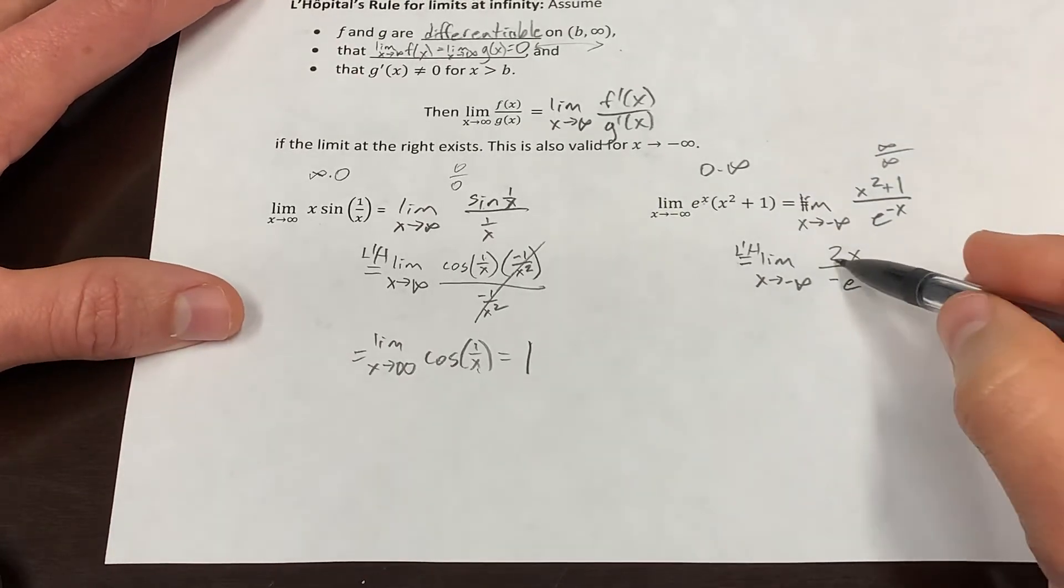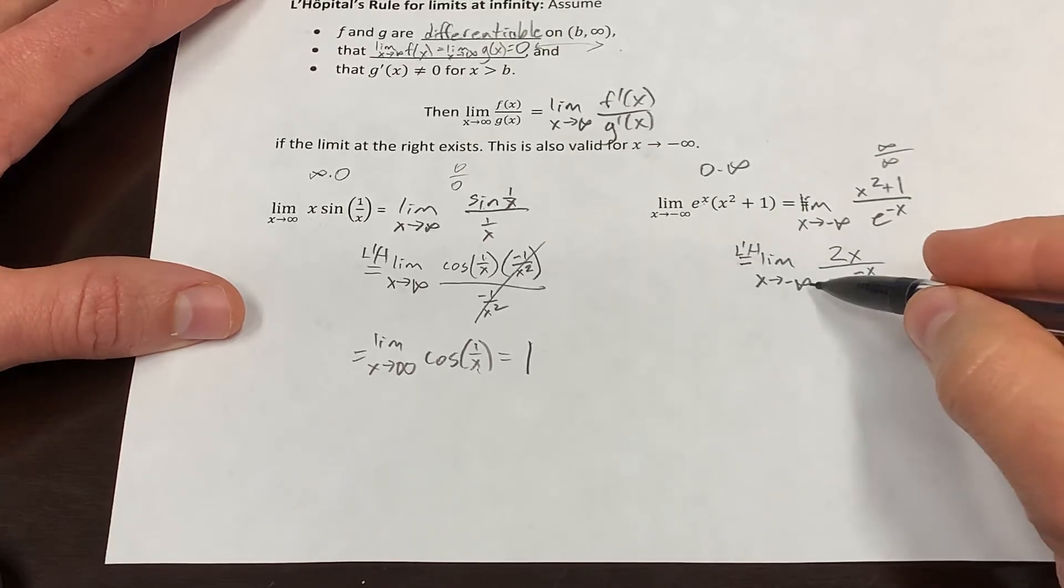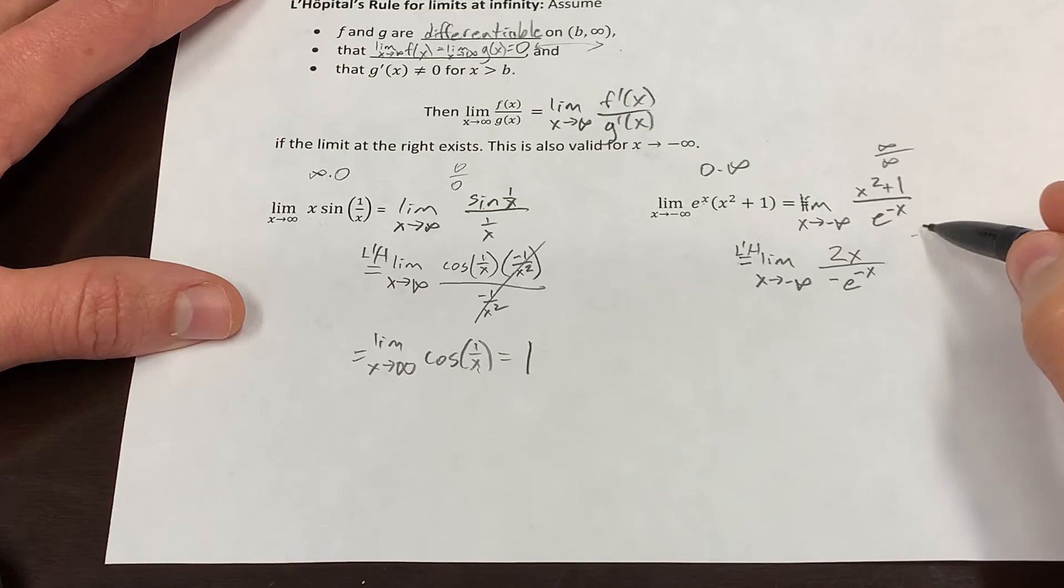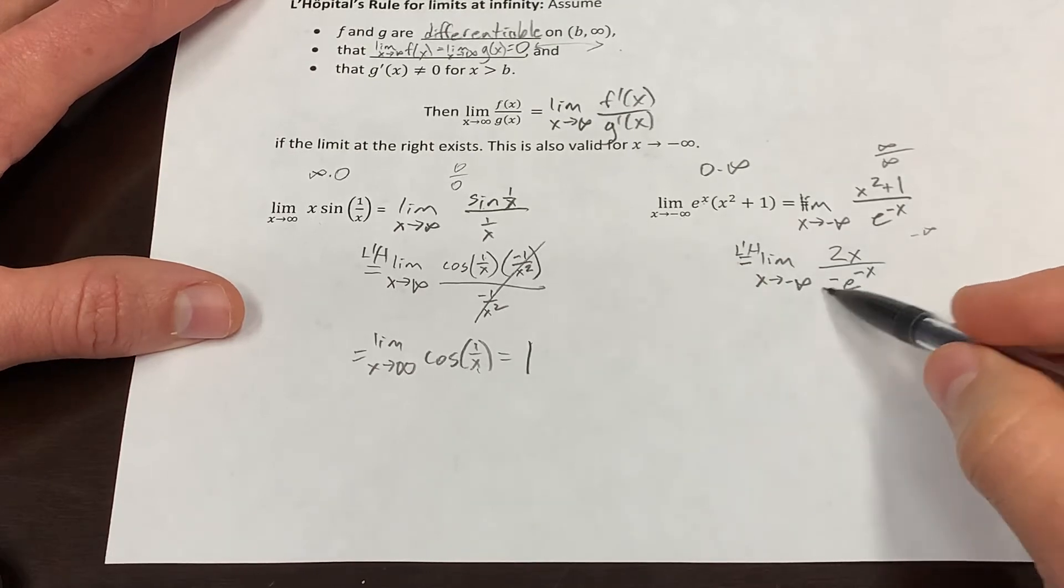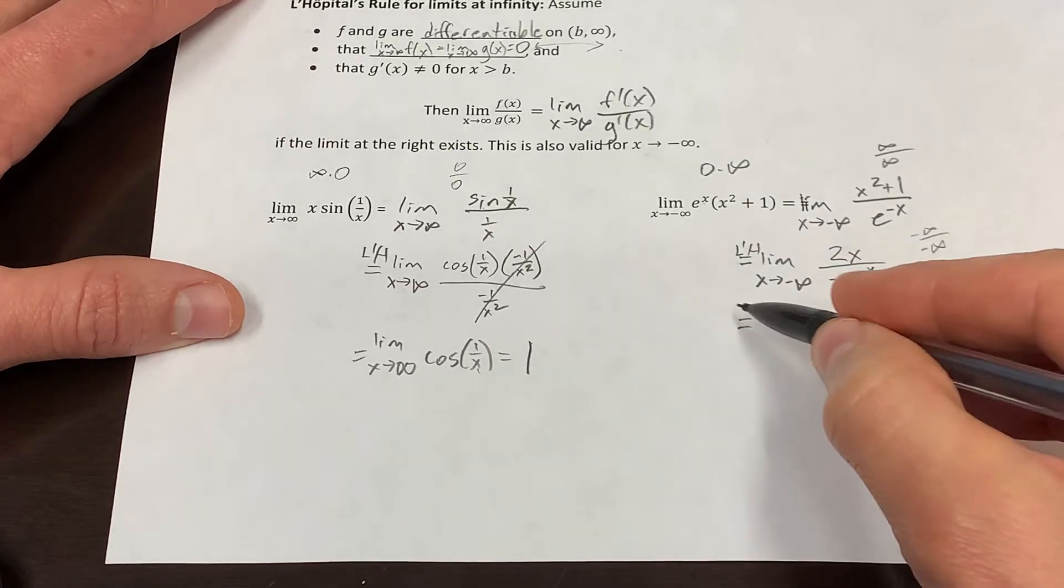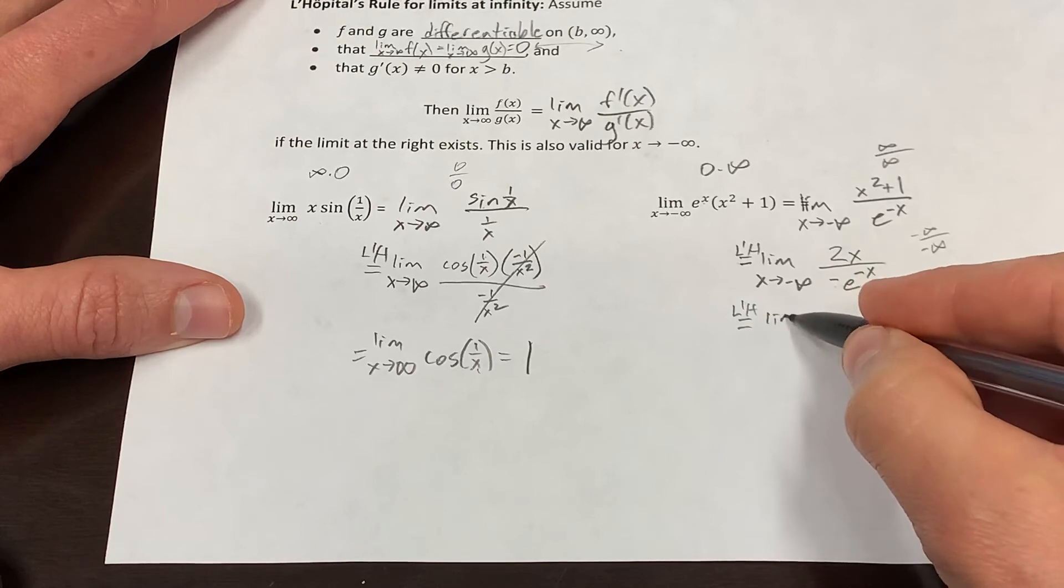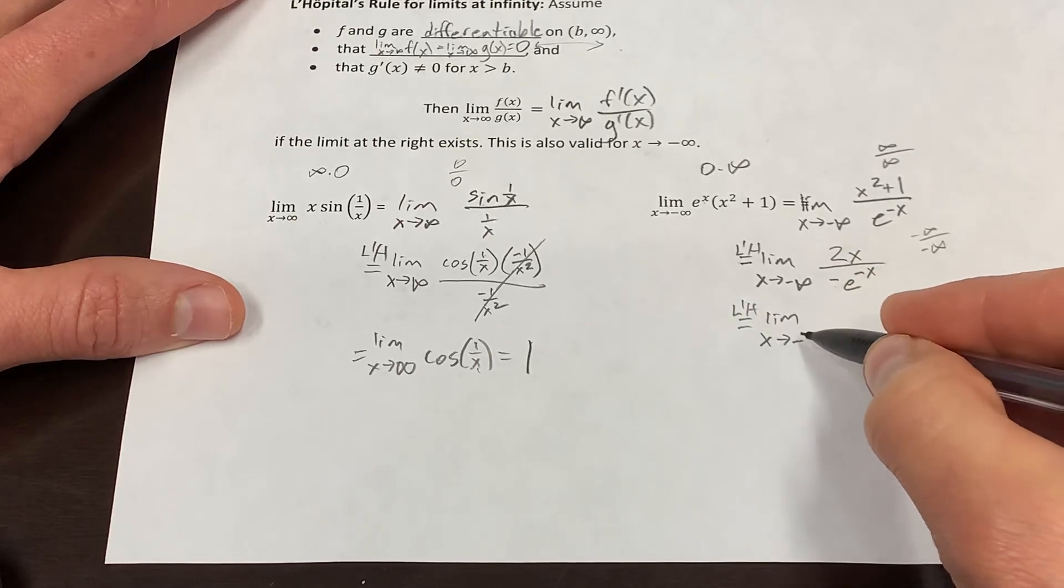Now this happens on occasion. This is still going to infinity. That's still going to, sorry, this is going to negative infinity. Now this is going to negative infinity. So we got to use L'Hôpital's again. Again, this little notation lets me know when I look back that I've used it twice.